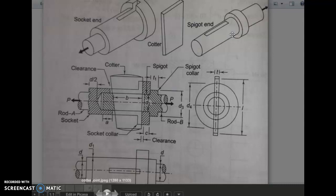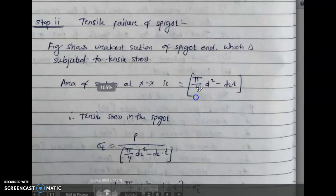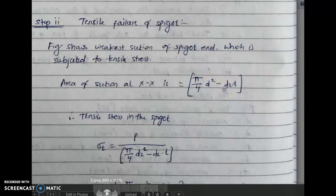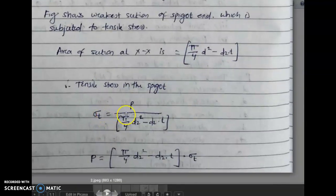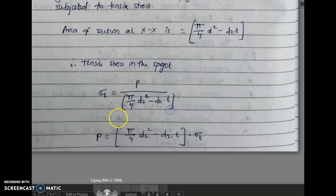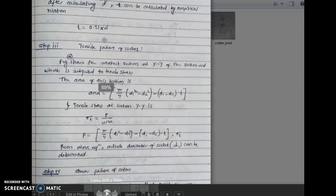In step two, the area of section at XX is (pi/4 d2 squared) minus d2 into t. Here pi/4 d2 squared is the circular area of the rod, minus d2 into t is the rectangular area corresponding to the cotter slot. Tensile stress in the spigot is P upon area, so sigma t equals P upon [(pi/4 d2 squared) minus d2 into t]. Rearranging, (pi/4 d2 squared) minus d2 into t equals P upon sigma t.